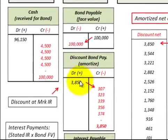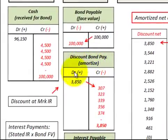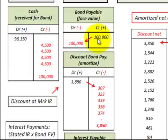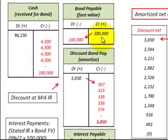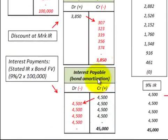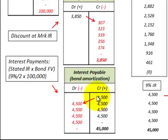What we're going to do is amortize this discount on bonds payable down to a zero balance, so that at the maturity date of the bond the carrying value will be $100,000. We're also going to look at the interest payable on this bond — those are the semi-annual interest payments we pay to our bondholders, and those are based on the stated rate of interest on the bond.